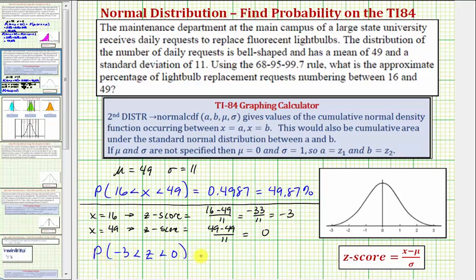And we can also calculate this percent or probability on the TI-84. But remember, when we have z-scores, mu, the mean, would be equal to zero, and sigma, the standard deviation, would be equal to one.